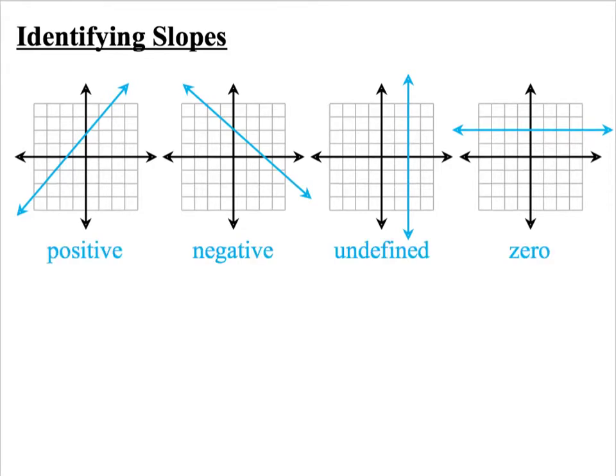Hopefully most of you remembered at least the first two. This line has a positive slope because you're going up the hill. This line has a negative slope because you're going down the hill. A vertical line has an undefined slope and a horizontal line has a zero slope.